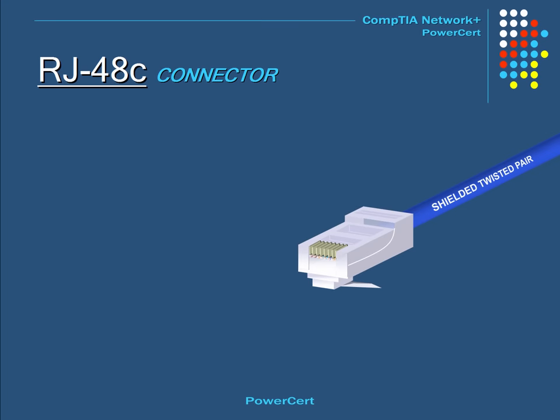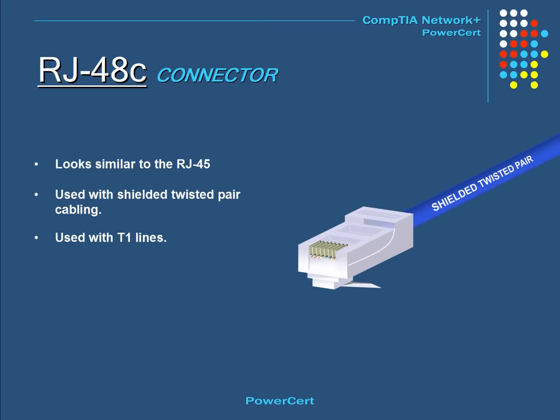The RJ48C looks very similar to the RJ45. The difference is that the RJ48C is used with shielded twisted pair instead of unshielded twisted pair. It is primarily used with T1 lines and is also wired differently than the RJ45.